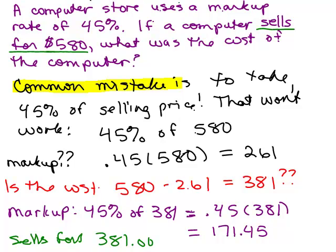If it uses a markup rate of 45% and you're given the selling price, you can't take 45% of the selling price. You have to take it of the cost, but you're not given the cost, right? So now you're going to go on to how to do this correctly.